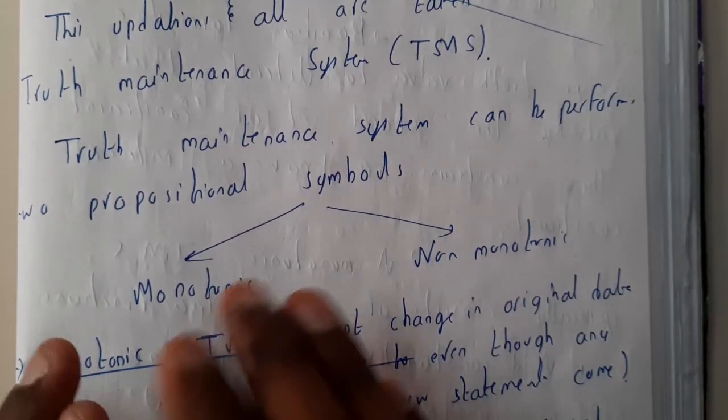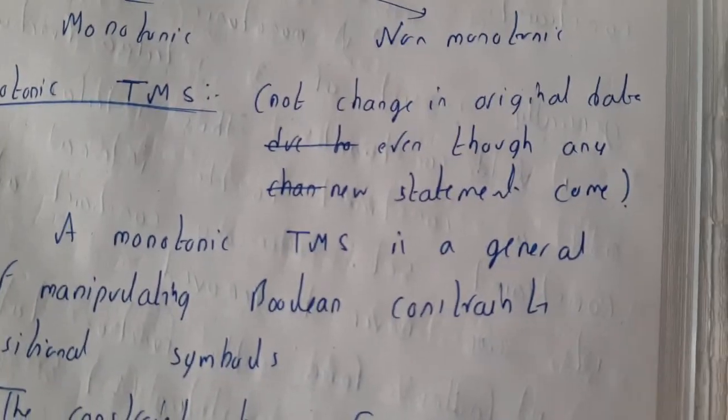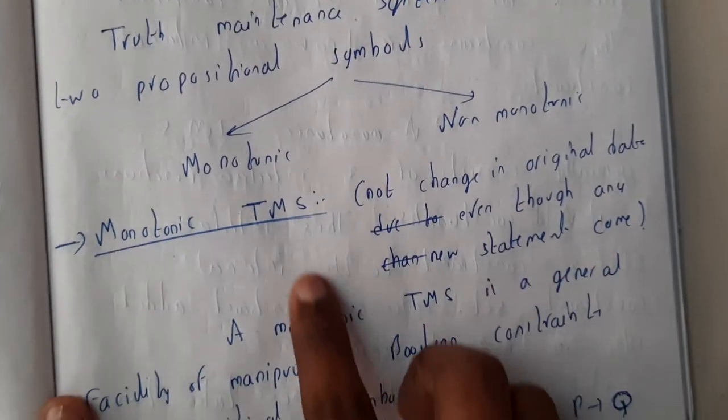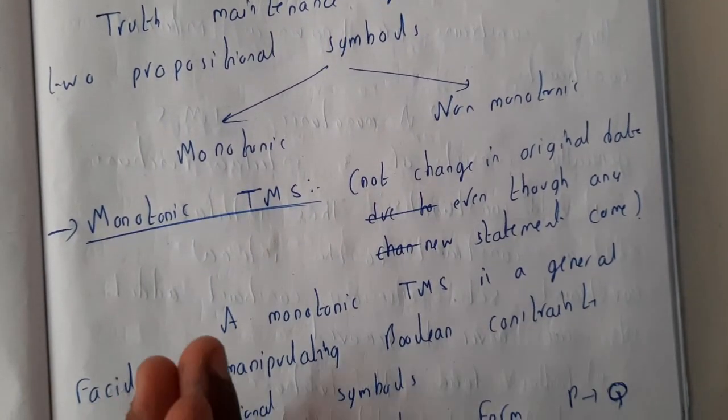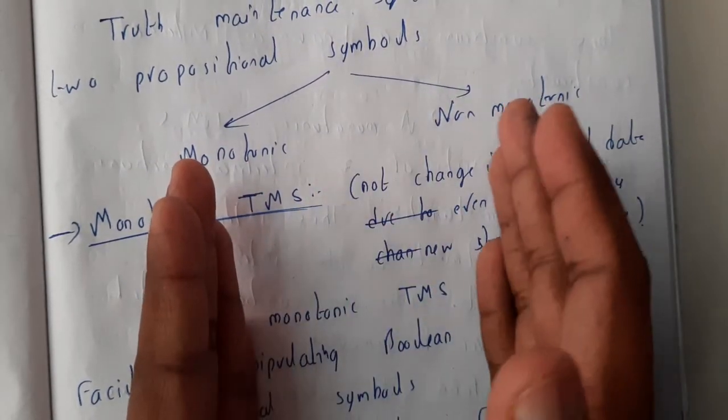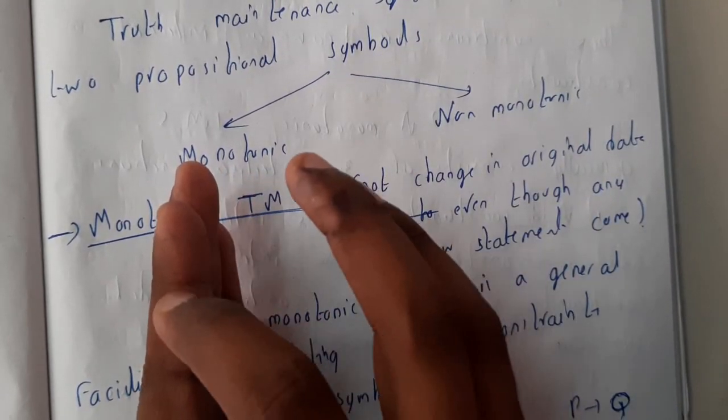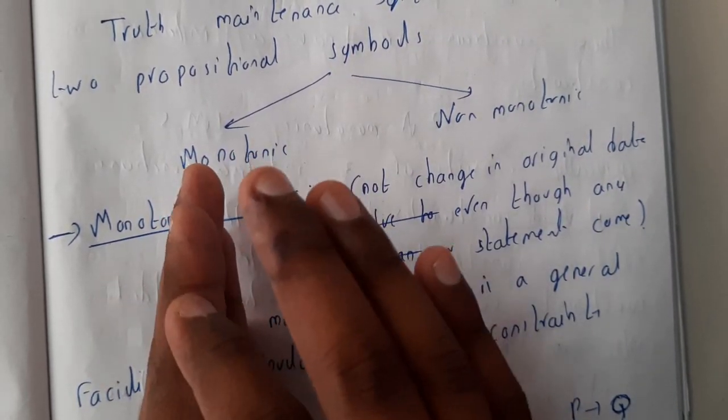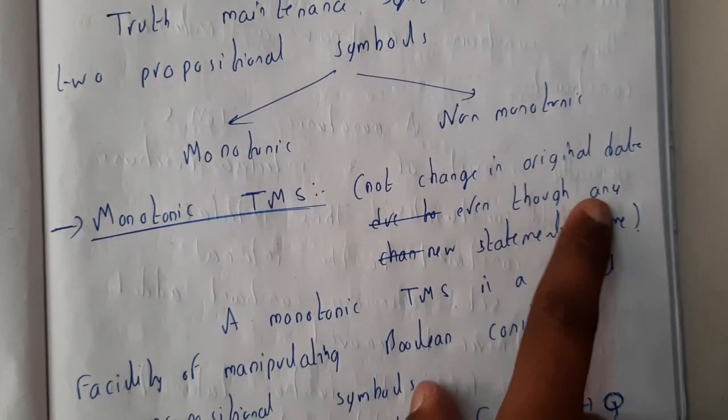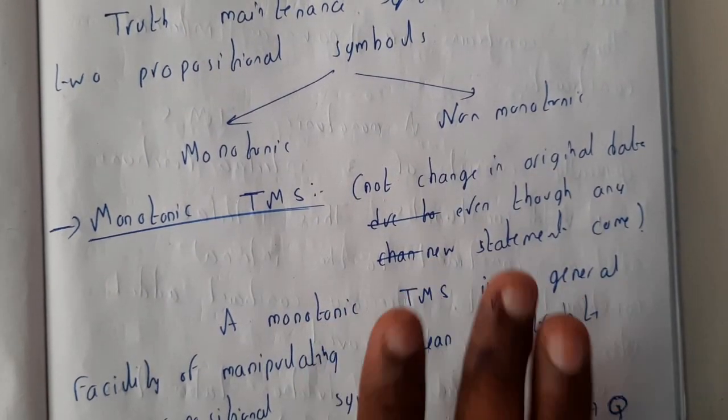Monotonic TMS - TMS is nothing but truth management system. So basically the original data, let us assume this is the original data. So this original data is previous data, right? So a new data came, and after inserting it if there is no change or no issue for the previous data, then that comes under monotonic TMS. So no change in original data even though any statement comes.